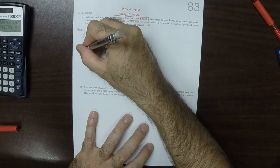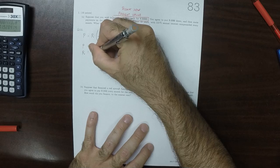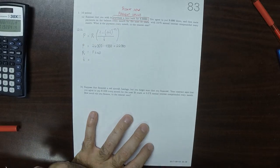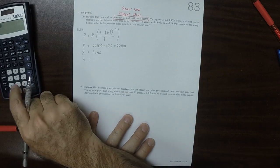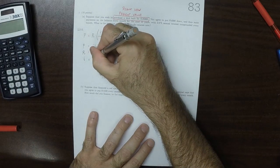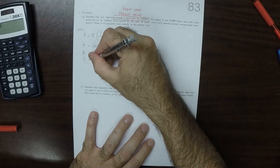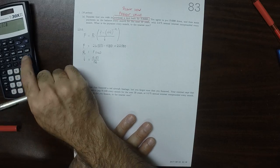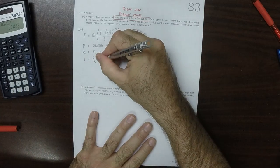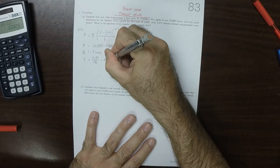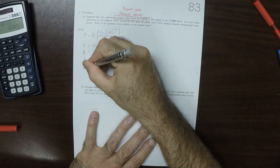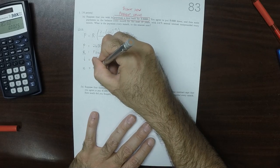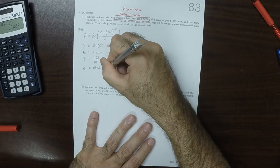What is the payment every month? Well, R, this is what you're supposed to find. i is 3%, so that's 0.03 annual interest compounded every month, so 0.03 over 12 is 0.0025, and then n, it says 10 years, so 10 years multiplied by 12 months per year is 120.